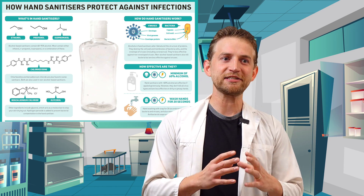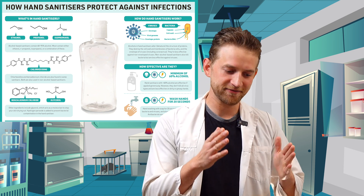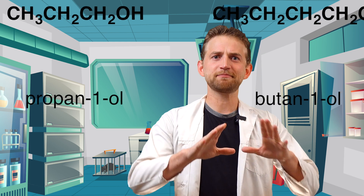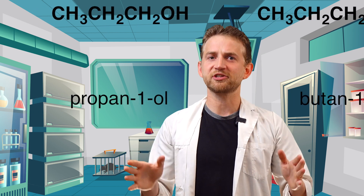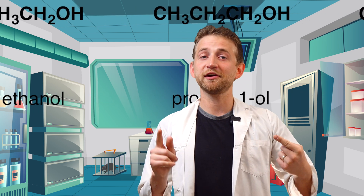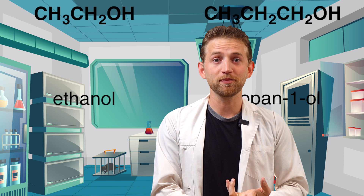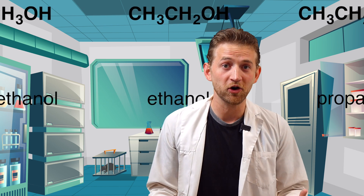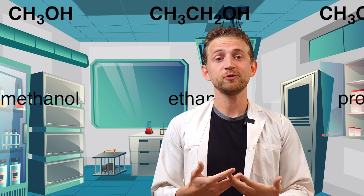Now, alcohol is not a specific thing — it's a spectrum. So there's ethyl alcohol, there's isopropyl alcohol, there's lots of different types of alcohol that are used. So how does alcohol kill germs and bacteria?